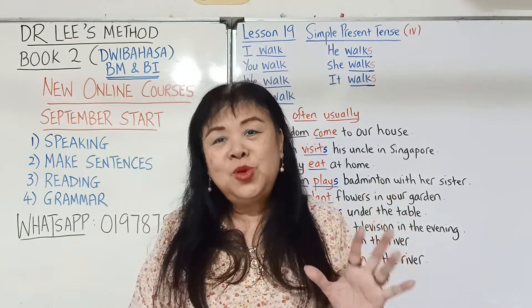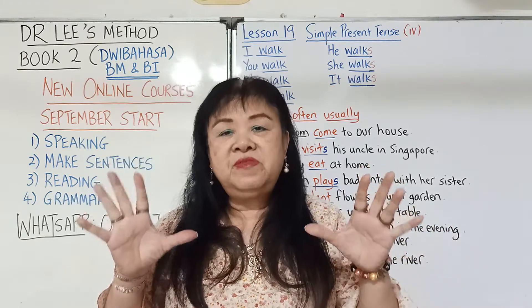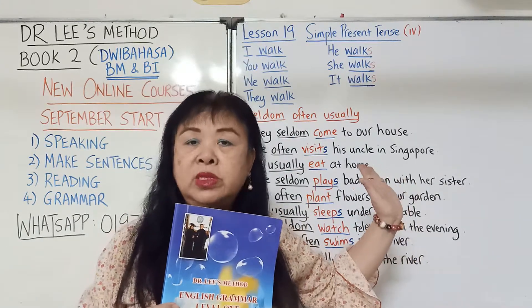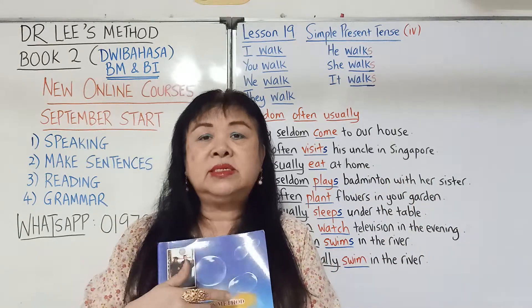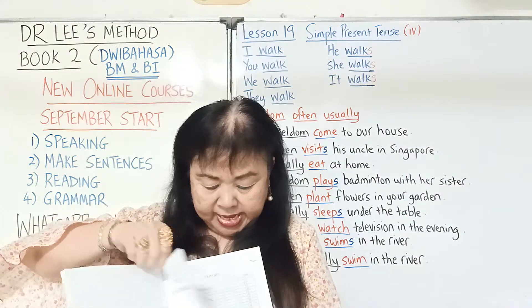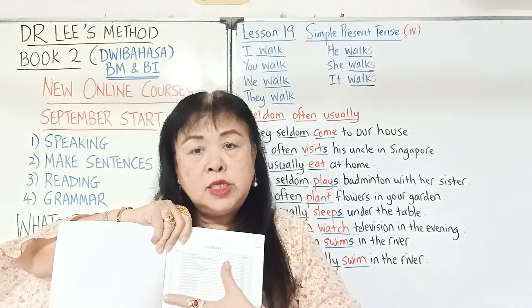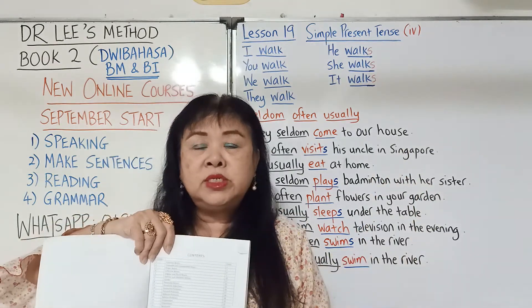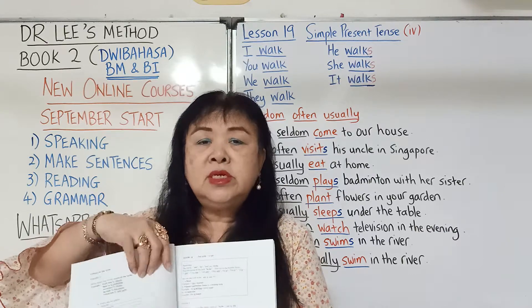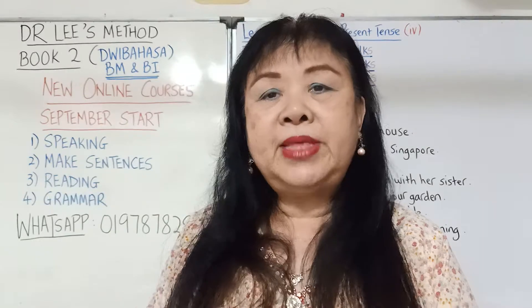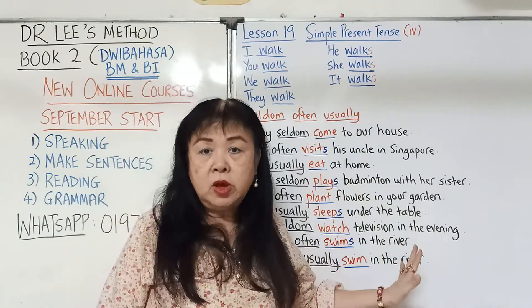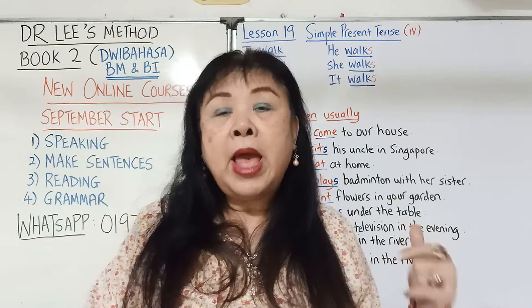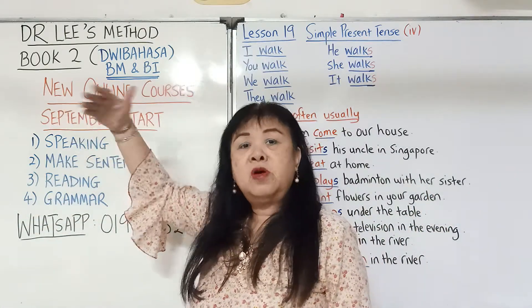First of all, I would like to welcome you to join my new program. This is totally a revision program — a revision of my Book One, 38 chapters altogether. What you are seeing on the board now, Lesson 19, is the same as this Book Level One, and the contents are the same. In this book, Lesson 19 is Simple Present Tense. But the questions in this whole book are not the same as what you see on the board. So for those of you who have bought this book, you are actually doing it two times. This is the second round, before my Book Two comes out.